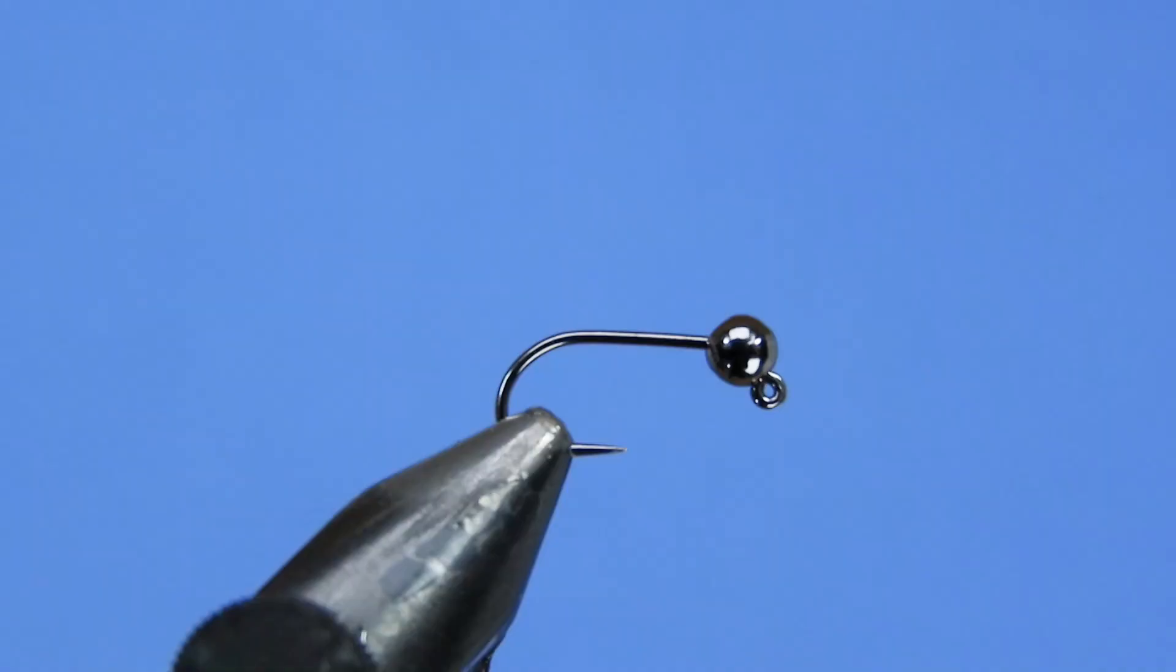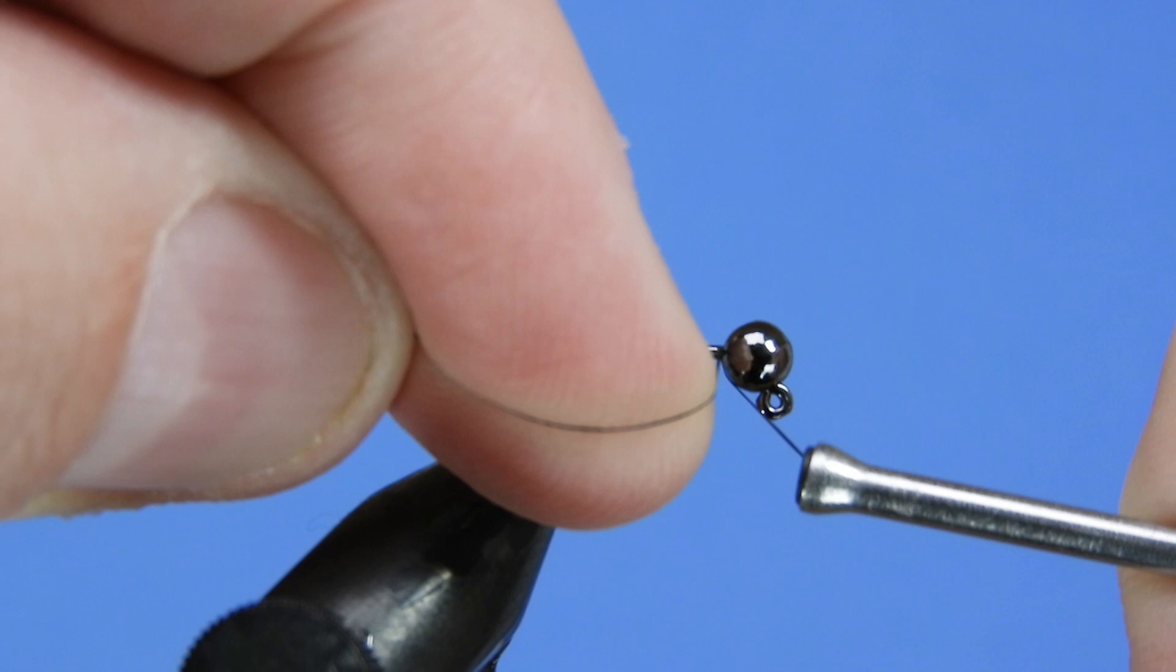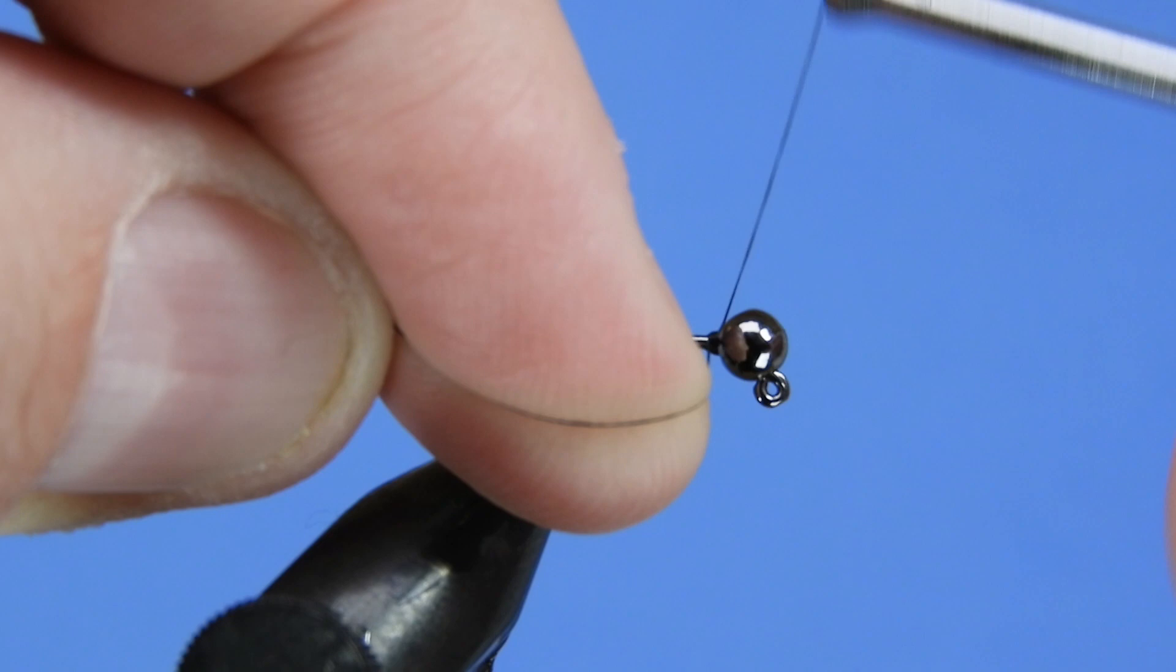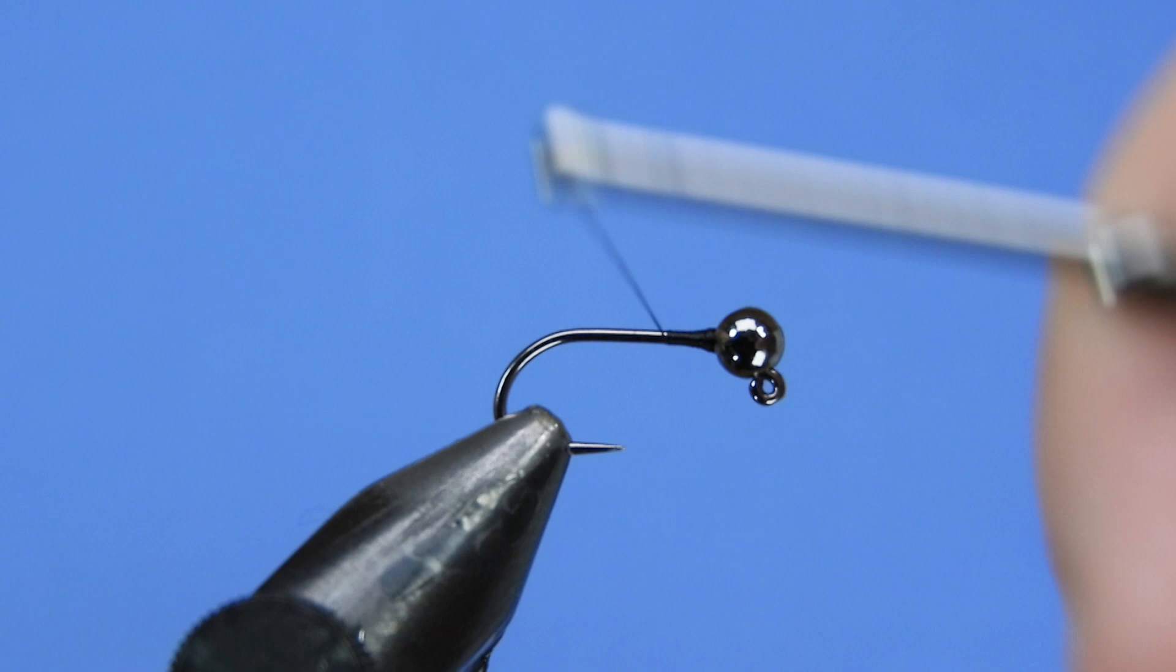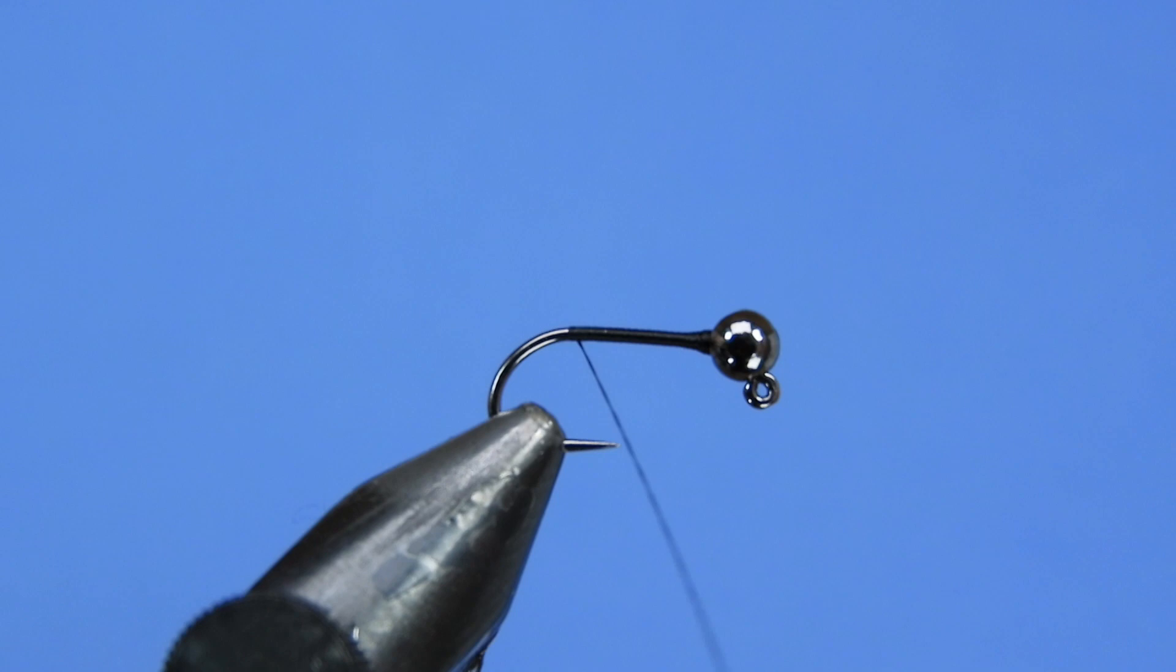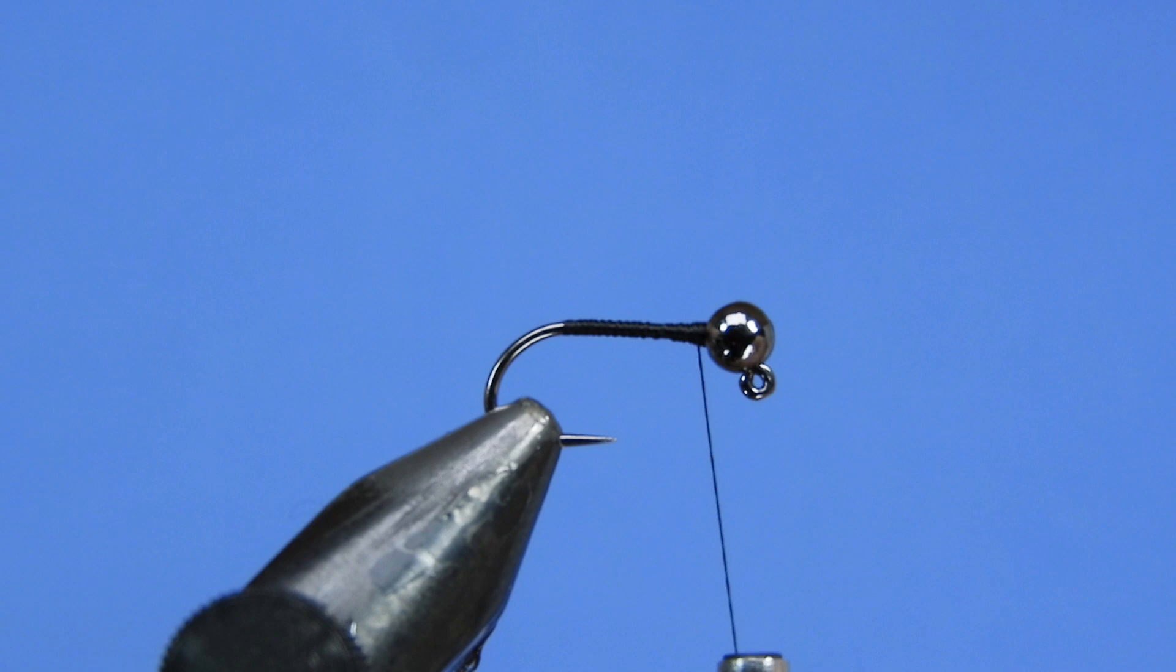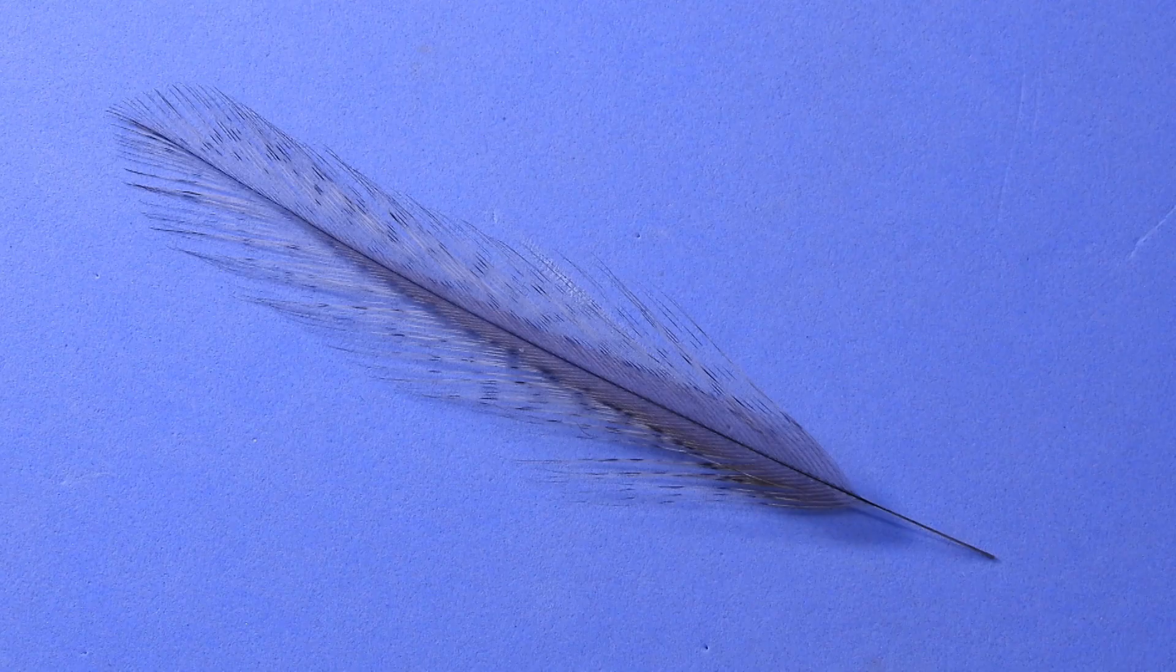Take some black 70D thread or 8-ought thread. We're just going to start by tying in right behind the bead. We just want to secure that. What I'd like to do is just take a few wraps and just prop up that bead. You can kind of see there it stopped bouncing around, so once we got that we know we've got it secured. If you want to, you can add a little bit of head cement or some glue in there just to make sure it's really secure. I'm just going to take touching turns down to the back of our body and then back up to just behind the bead there.